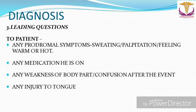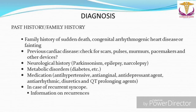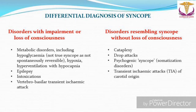Some leading questions must be asked: did the patient have any prodromal symptoms like sweating, palpitation, or feeling of warmth? Was he on any medication? Did he have any weakness of a body part or confusion on recovery? Did he sustain any injury? Ask for family history of sudden death, congenital arrhythmogenic heart disease, or fainting, and past history of cardiac disease. Check for scars, pulses, murmurs, and pacemakers. Does he have a neurological history such as Parkinsonism, epilepsy, or narcolepsy? Is he diabetic or on antihypertensives, anti-anginals, antidepressants, antiarrhythmics, diuretics, or QT-prolonging agents? In recurrent syncope, detailed information on recurrences should be obtained.